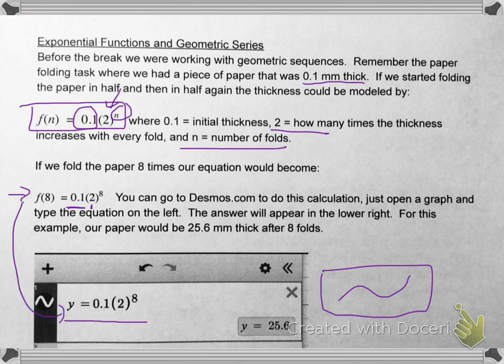Just type it in like this and it'll calculate that value for you. So our answer would be that the paper would be 25.6 millimeters thick after 8 folds. And that's how you go about doing that.